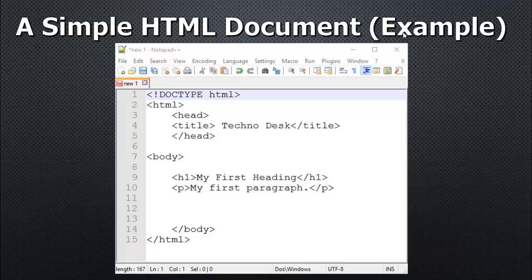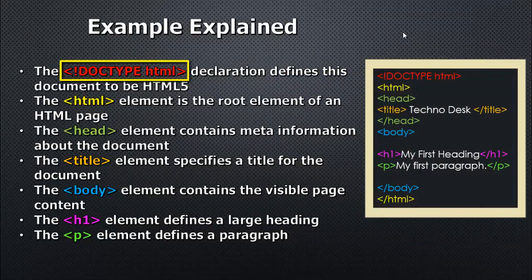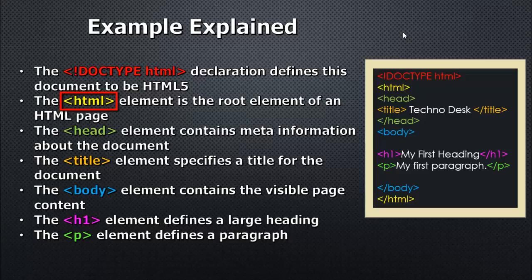Now I am going to explain some tags. DOCTYPE defines HTML5 version — when you put the DOCTYPE HTML declaration, that first line defines the document as HTML5 version. Then the HTML element, written as an opening angle bracket HTML closing angle bracket, is the root element of an HTML page. When you create a new page you must include this, and you have to close it with the slash HTML closing tag. This is the root element for an HTML page.